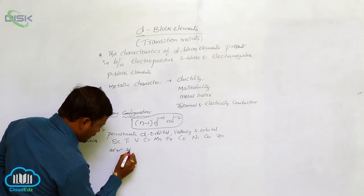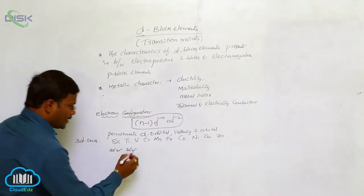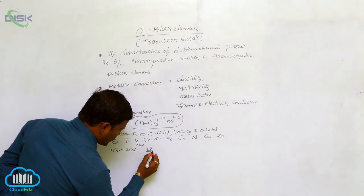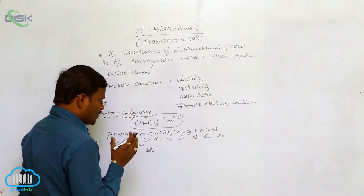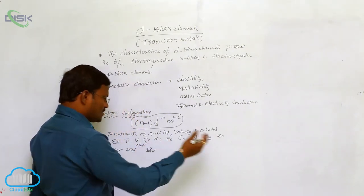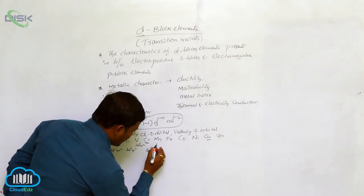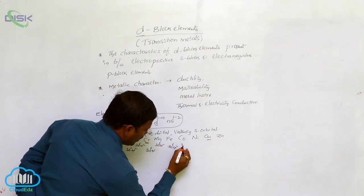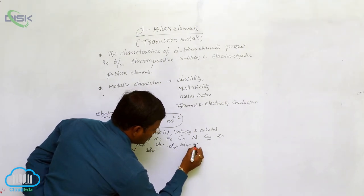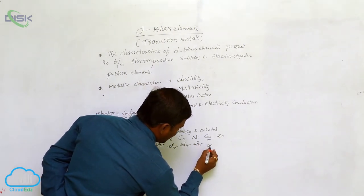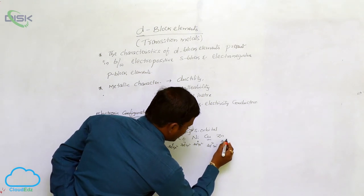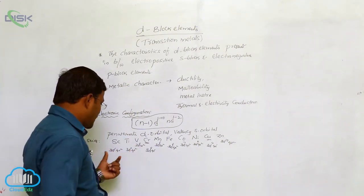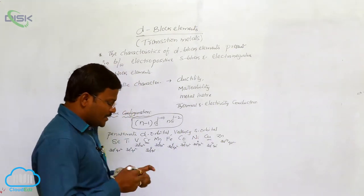Similarly, titanium is 3d² 4s², vanadium is 3d³ 4s², chromium is 3d⁵ 4s¹ (special case), manganese is 3d⁵ 4s², iron is 3d⁶ 4s², cobalt is 3d⁷ 4s², nickel is 3d⁸ 4s², copper is 3d¹⁰ 4s¹ (special case), and zinc is 3d¹⁰ 4s². The valency orbit is the fourth orbit and the penultimate orbit is the third orbit, where the d-orbital has 1 to 10 electrons, starting from scandium to zinc.